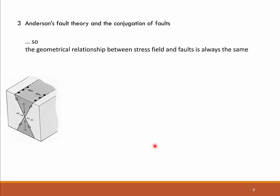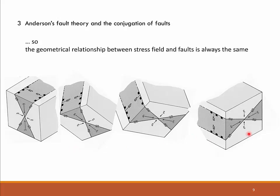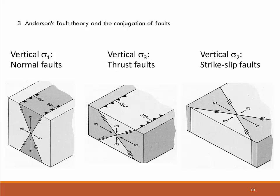We can start again with normal faults, rotate in different directions to obtain oblique-slip faults, and perhaps end up with thrust faults if we rotate the stress field so that sigma 1 becomes horizontal and sigma 3 vertical. So if Anderson's fault theory is correct and one principal stress vector is always vertical, we can easily explain why normal faults, thrust faults, and strike-slip faults are so common in nature: vertical sigma 1 produces normal faults, vertical sigma 3 produces thrusts, and vertical sigma 2 produces strike-slip faults.